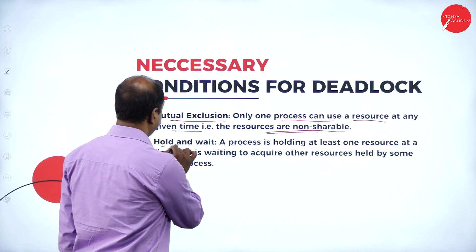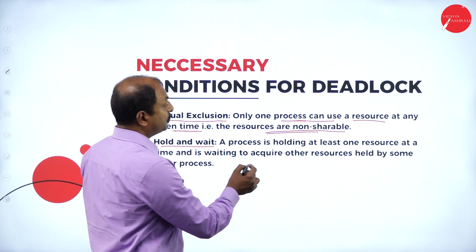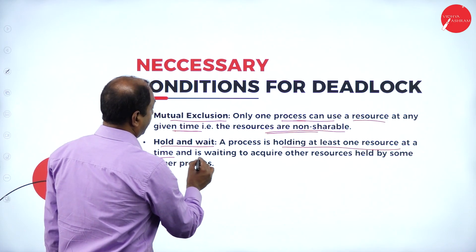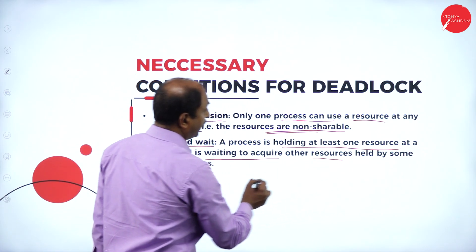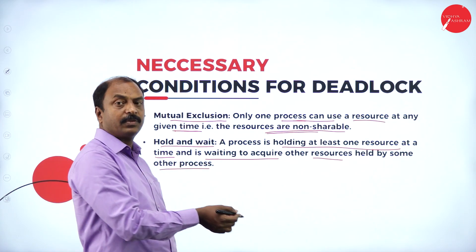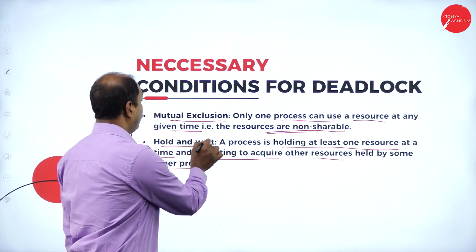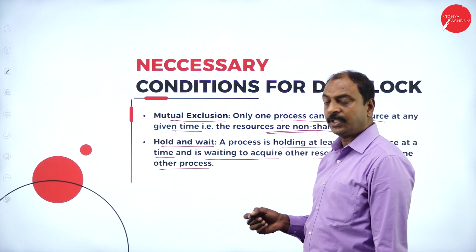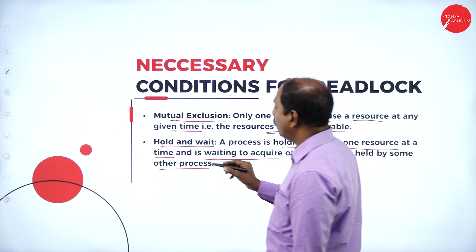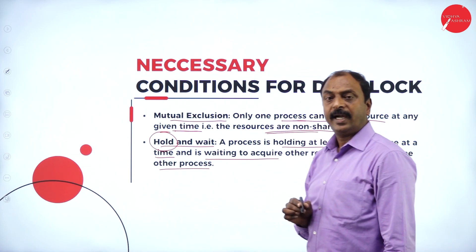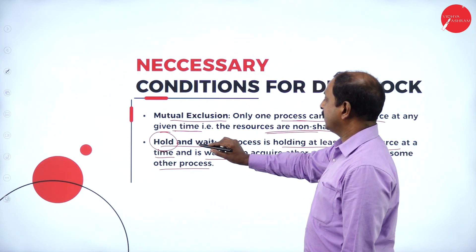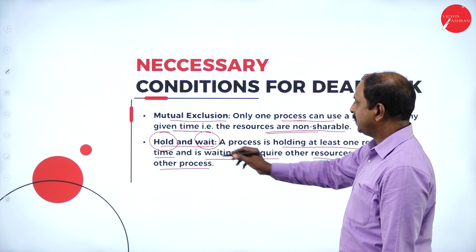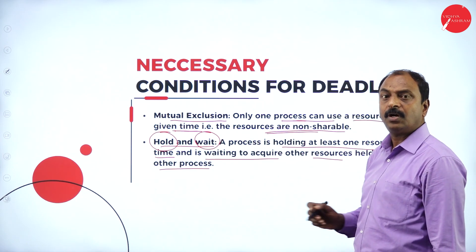The second condition is hold and wait. A process is holding at least one resource at a time and is waiting to acquire another resource held by some other process. When a process is in execution, that particular process holds the resources, and at the same time, other processes will be waiting for the same resources for their execution.